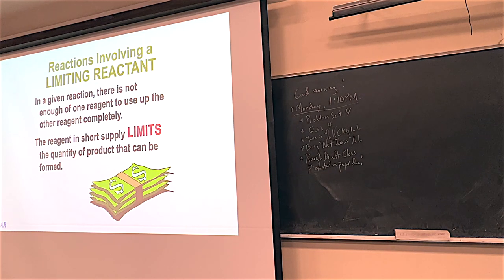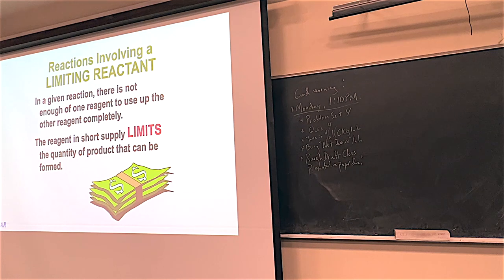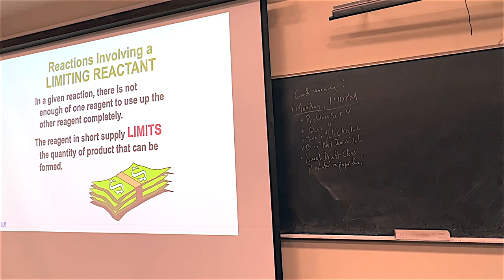Limiting reactants are a really interesting idea. In cooking, you usually know the right amounts to put in so that everything you put in is used up. But in chemistry, sometimes it's helpful to have a lot of one reactant versus the other. Sometimes if you have two or more reagents, one of them is going to limit how much product you make—that's called the limiting reactant.